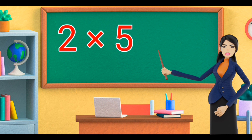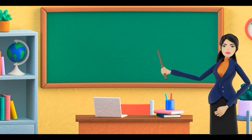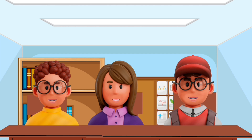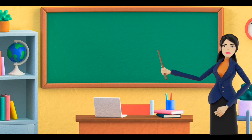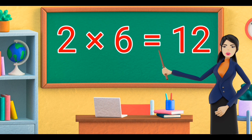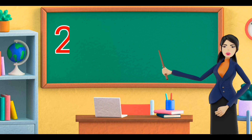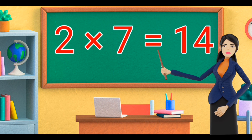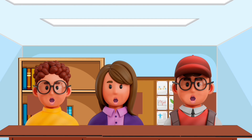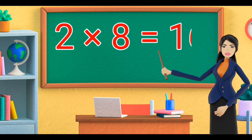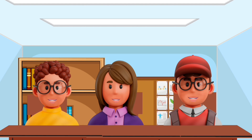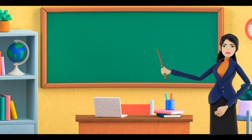Two fives are ten. Two fives are ten. Two sixes are twelve. Two sixes are twelve. Two sevens are fourteen. Two sevens are fourteen. Two eights are sixteen. Two eights are sixteen.